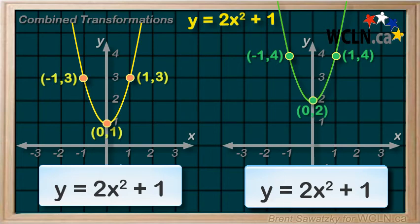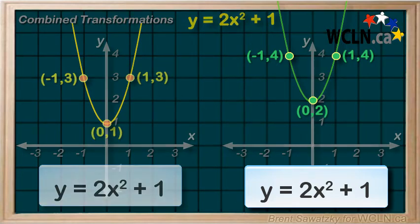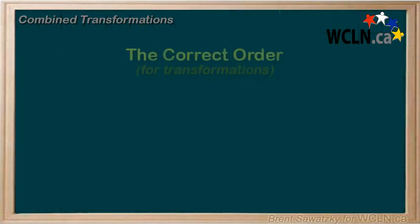This first attempt is the accurate one, so let's establish an order here. Now that we know that order does matter, let's establish an order that allows us to be consistently correct. So for multiple transformations, all combined in a relation,